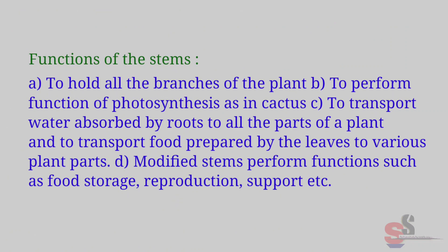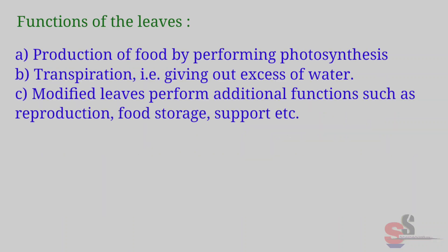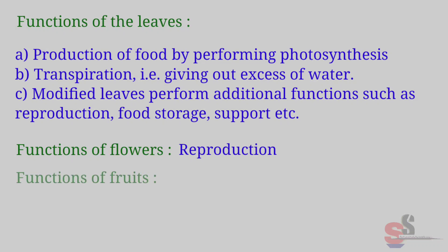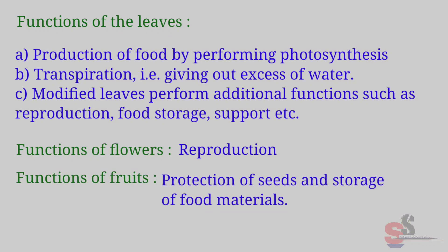Functions of the stem: To hold all the branches of the plant; to perform photosynthesis as in cactus; to transport water absorbed by roots to all parts of the plant; and to transport food prepared by leaves to various plant parts. Modified stems perform functions such as food storage, reproduction, and support. Functions of the leaves: Production of food by photosynthesis; transpiration — giving out excess water. Modified leaves perform additional functions such as reproduction, food storage, and support. Functions of flowers: Reproduction. Functions of fruits: Protection of seeds and storage of food materials.